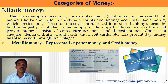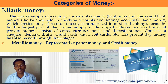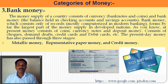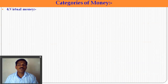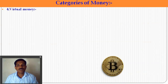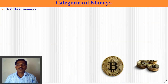Modern-day money has passed through three stages. First, we used metallic money. After that, as metals became scarce, we moved to paper money for transactions. Then representative paper money emerged after metallic money. And now we use credit money — credit cards and debit cards — for transactions.